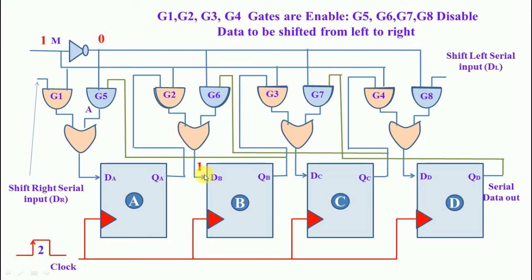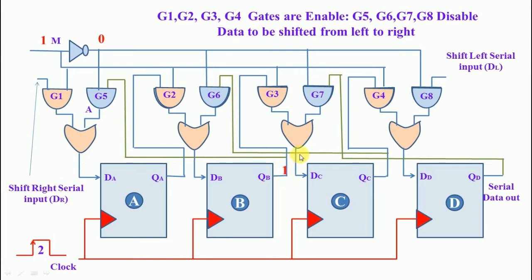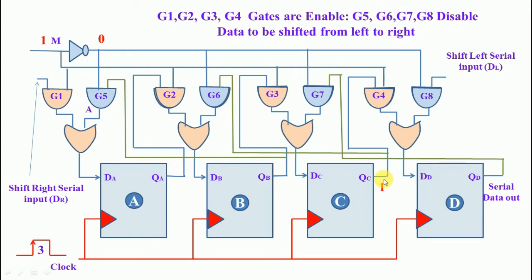After applying the second clock pulse, DB is shifted and this 1 is loaded into DC. Then applying the third clock pulse, the DC input with value 1 is shifted, and the data moves along — this 1 is loaded into DD.